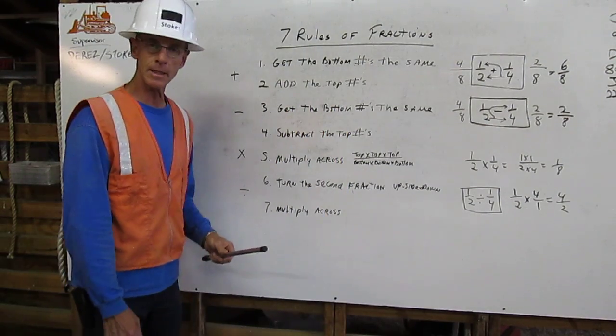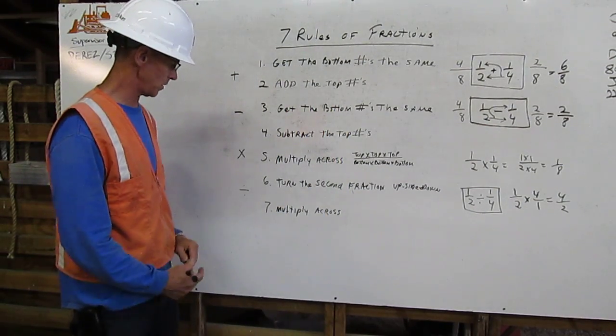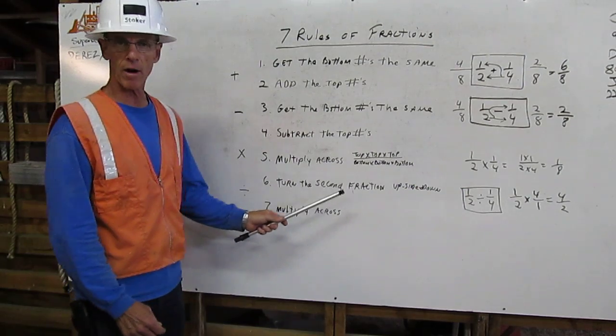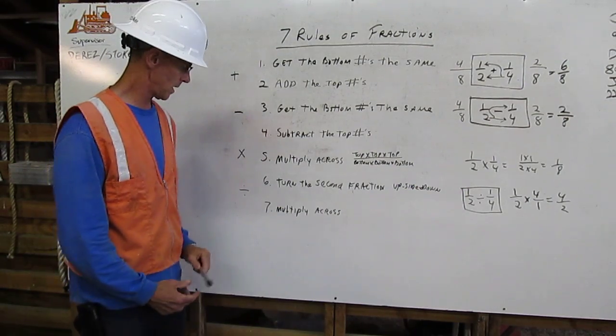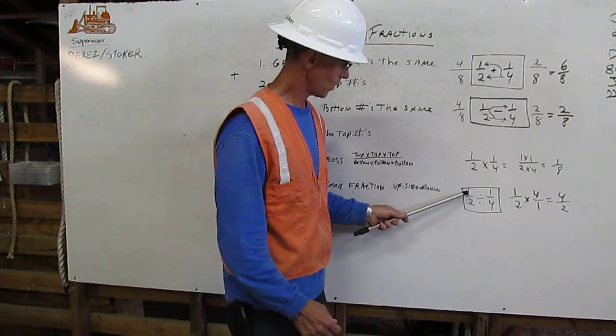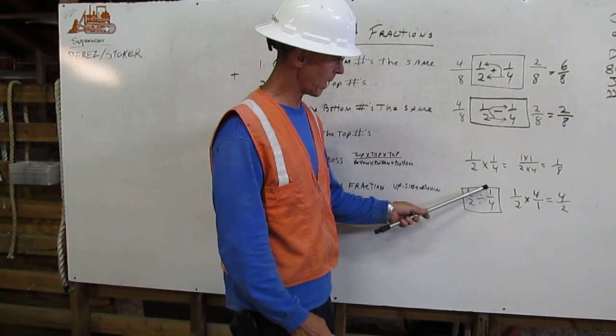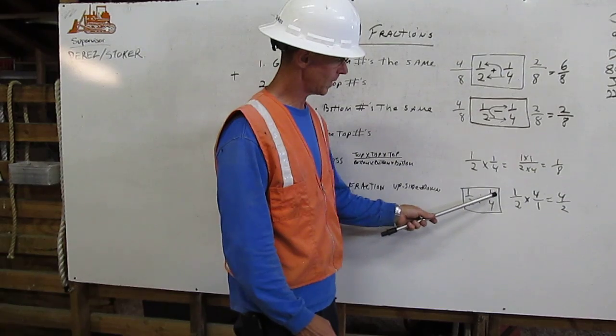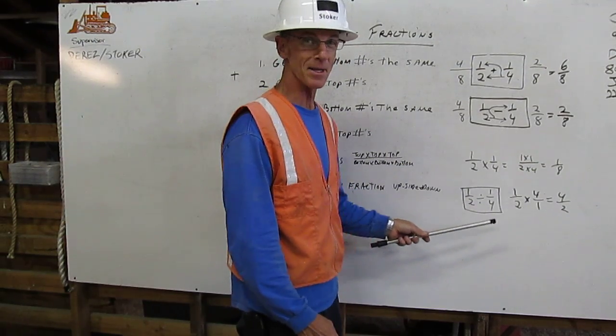And lastly, our rules for division. Turn the second fraction upside down. Multiply across. One-half divided by one-fourth. Put it in the box because we changed it.